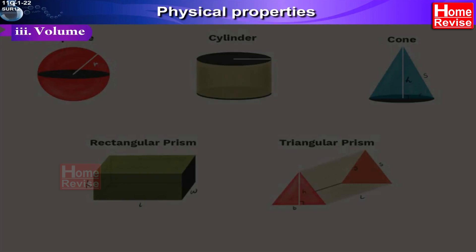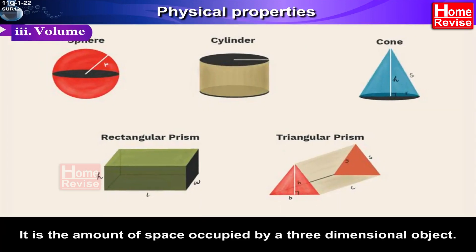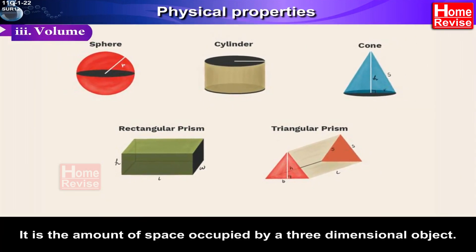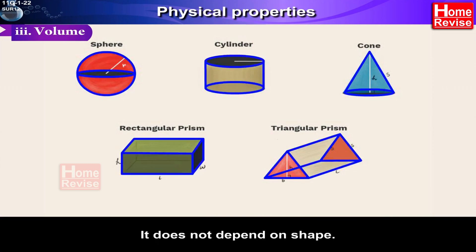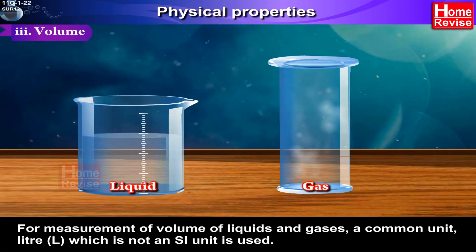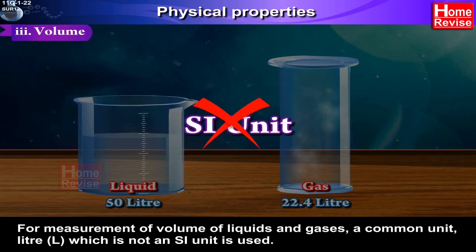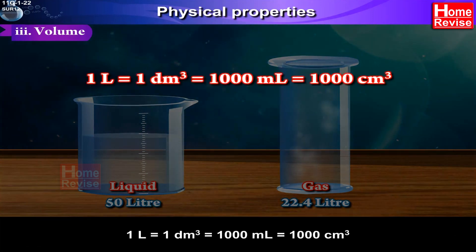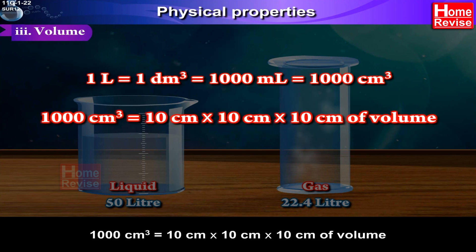Volume. It is the amount of space occupied by a three-dimensional object. It does not depend on shape. For measurement of volume of liquids and gases, a common unit liter (L) which is not an SI unit is used. 1 L is equal to 1 dm cube, which is equal to 1000 milliliter, is equal to 1000 centimeter cube.